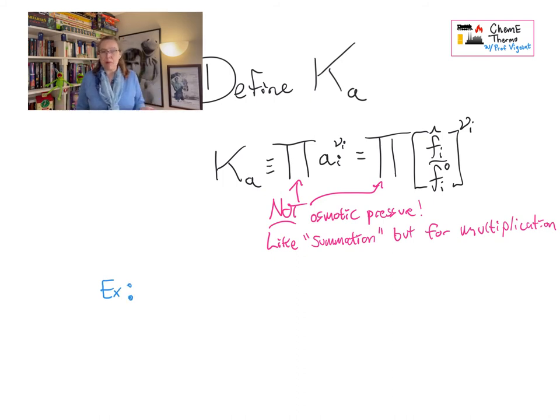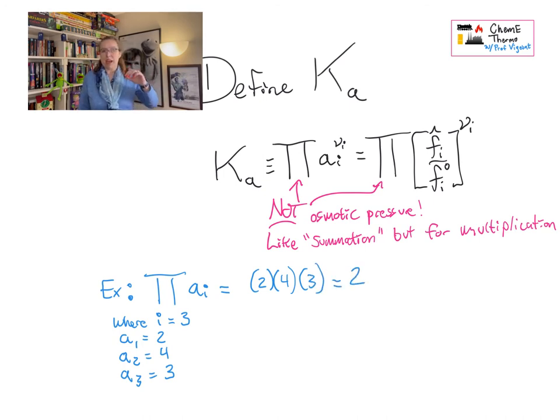For example, just to put this in numbers to make it easier for you to think about, if we did capital pi of A_i and A was equal to three components in the system, and where A_i is the value two, and A_i is the value four, and A_i is the value three, the answer to this calculation would be two times four times three, which we can work out. Here we're mostly working symbolically, so it'll be activities all times each other, just written as letters, not quite so often as numerical values.